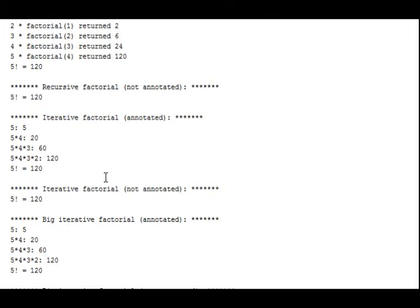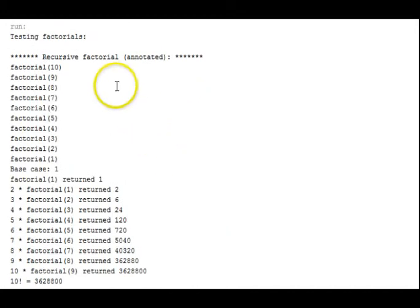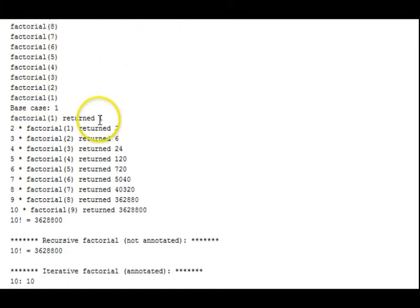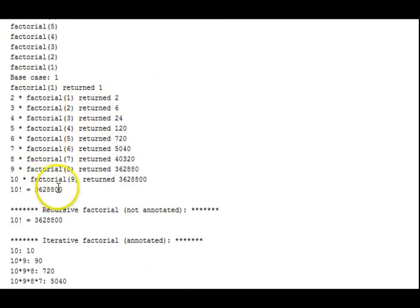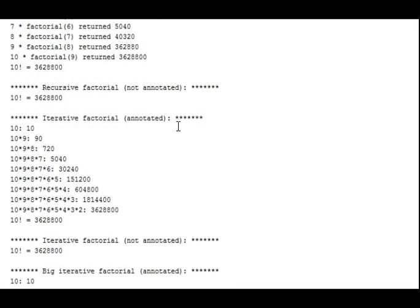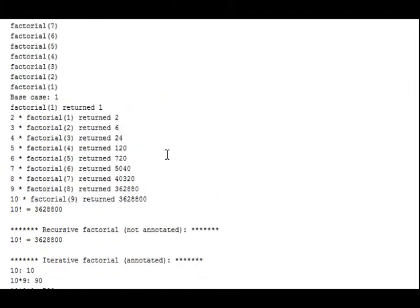Our next test case is 10. We see again 10, 9, 8. This is the recursive solution. Again, the base case of 1. And then returning back, unwinding the stack to compute 10 factorial. The iterative solution, very clearly a factorial annotation here. It's obvious what's going on. And the big integer, no difference there.